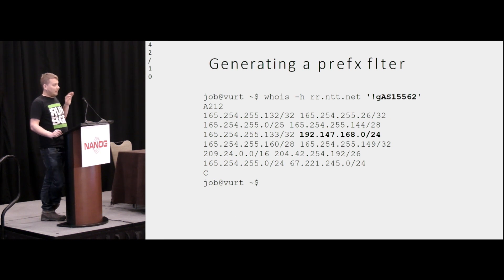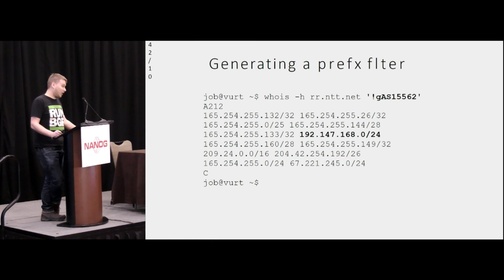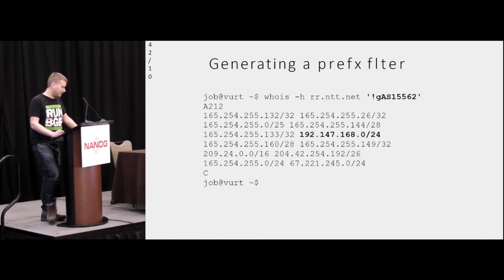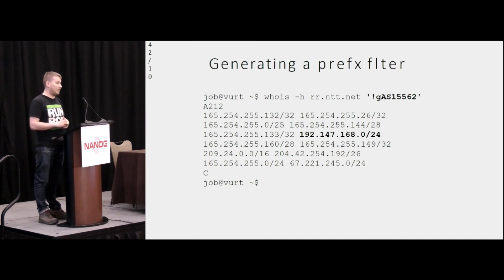If we zoom in on how that data is transformed into actual BGP prefix filters, certain queries are sent to an IRR daemon. The daemon will return a list of prefixes that can be originated by the ASN for which you did a reverse lookup. So, so far, so good.